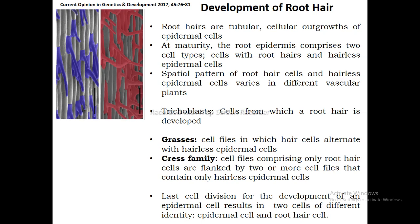Trichoblasts are the cells from which a root hair is developed. In grasses, there are cell files in which hair cells alternate with hairless epidermal cells. In the cress family, cell files comprising only root hair cells are flanked by two or more cell files that contain only hairless epidermal cells.